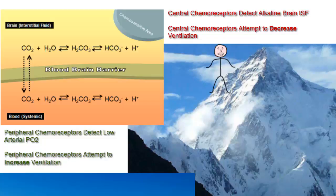So in this situation, we're in a state of conflict between our central chemoreceptors and our peripheral chemoreceptors. Our peripheral chemoreceptors say ventilate more because we need oxygen. Our central chemoreceptors say quit ventilating so much because the brain is becoming alkaline.